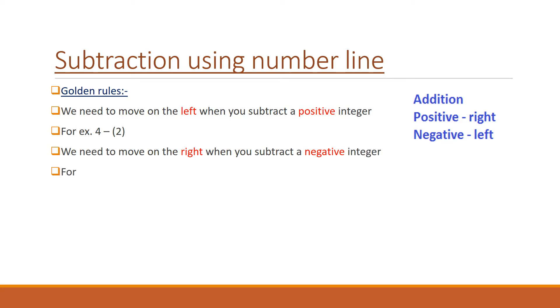For example, subtract minus 2 from 4 — here 2 is negative — so we need to move right on the number line.